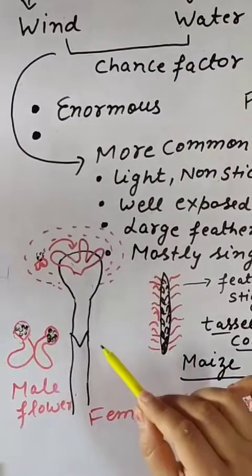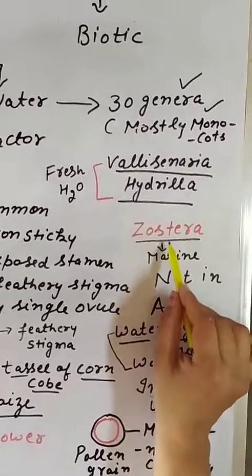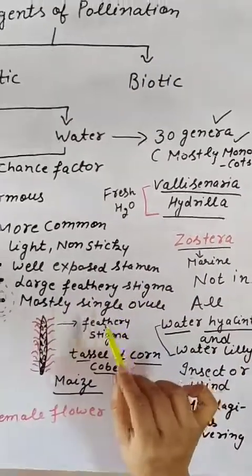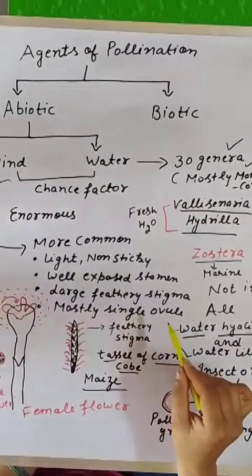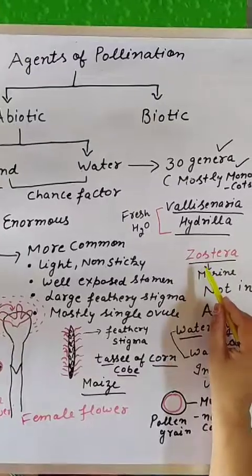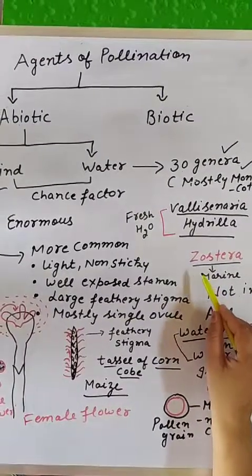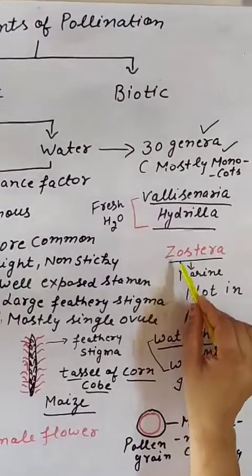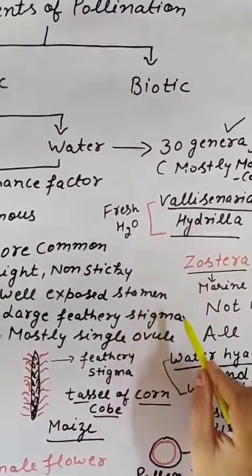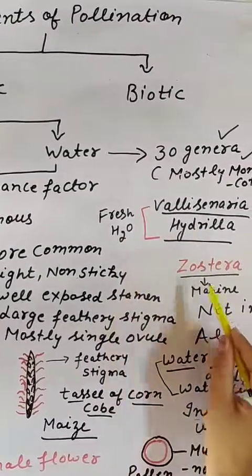Pollination in case of Zostera is different. In Zostera, the flower is present inside the water and the pollen grains are also released inside the water. In these flowers, the pollen grains are long, feathery, and ribbon-like so that they can reach the stigma of the flowers.